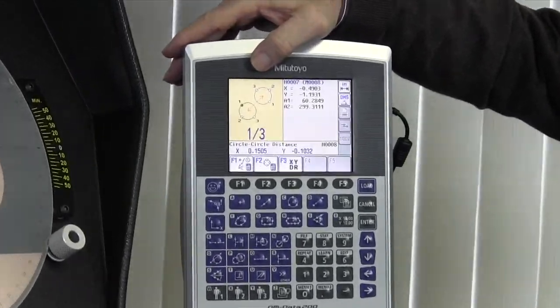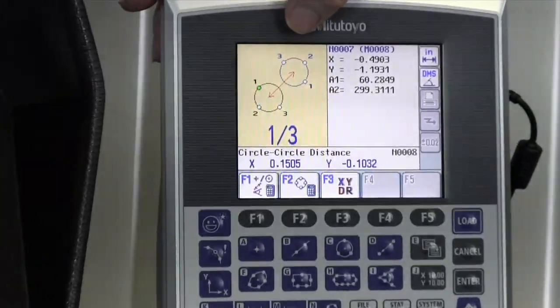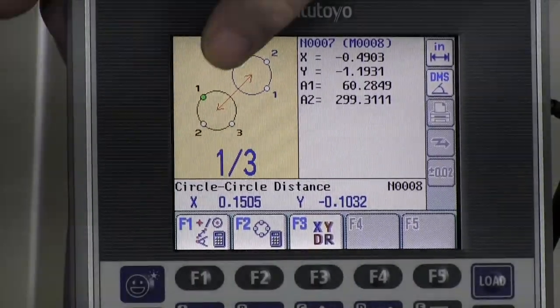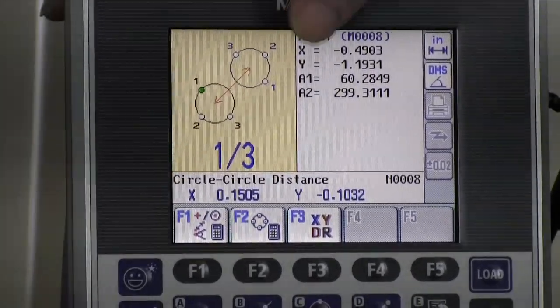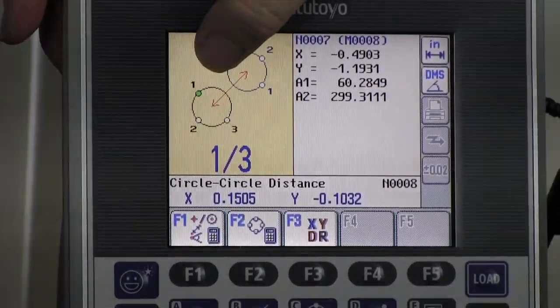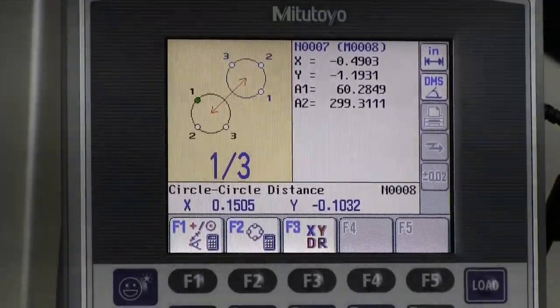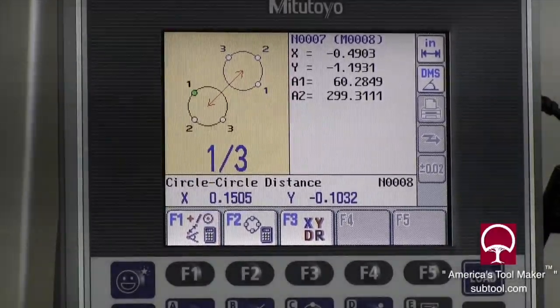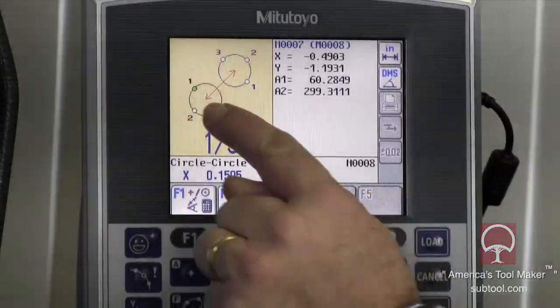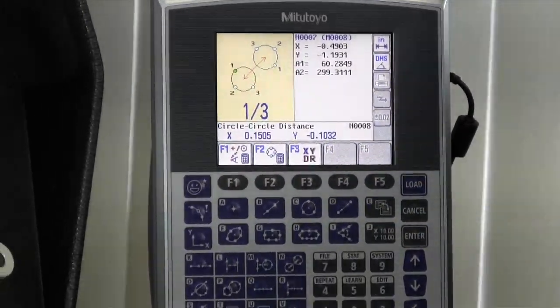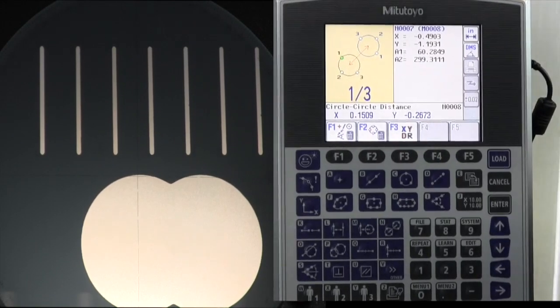Can you zoom in on that Glenn so we can show people? Each of the circles on the screen has three little circles on it. One's blinking green over here. That tells us that we need to take three points on circle A and three points on circle B.